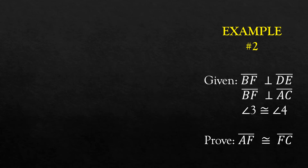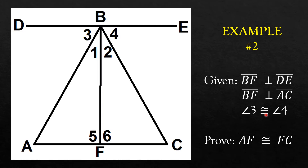Let's have another example. Suppose you are given that the hypothesis of this geometrical statement is that line segments BF and DE are perpendicular, line segments BF and AC are perpendicular, and angle 3 and angle 4 are congruent. And you are to prove that line segment AF is congruent to line segment FC. To do this, we need again to understand what we are given, think of its possible consequences while doing marks on the figure, and make a plan based on what you are to prove.